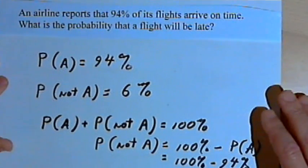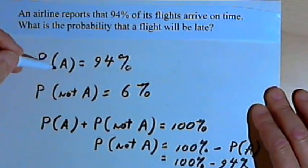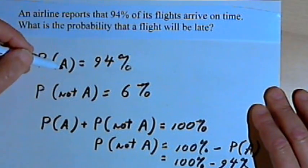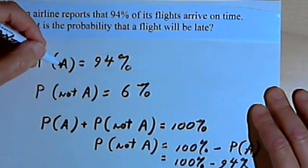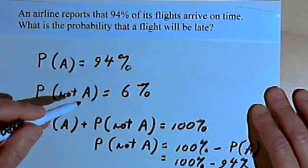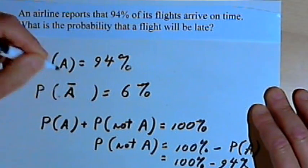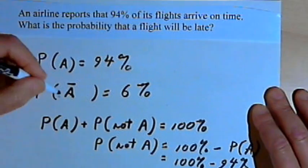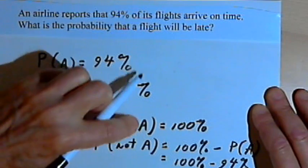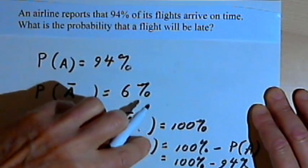So the probability of not A — the probability of the plane arriving late — is 6%. When we talk about A and not A, we call these complements of each other. If A is an event, its complement — the event not happening — is not A. We can write that as 'not A', or using a different notation, just write an A with a bar over it. So A with a bar over it means the complement of A.